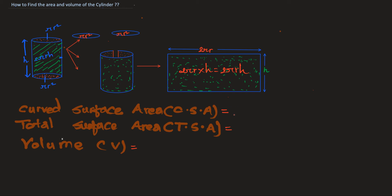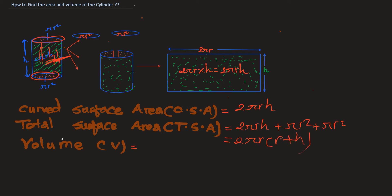So the area of the rectangle L×B gives us 2πrh. This is how the curved surface area is expressed as 2πrh. Now for the total surface area, if we include the curved surface area plus the two circular bases — each being πr² — the total surface area will be 2πrh + πr² + πr², which simplifies to 2πr(r + h).